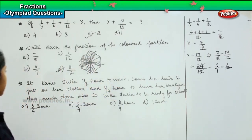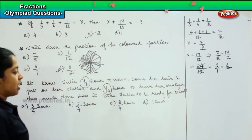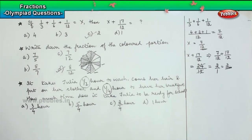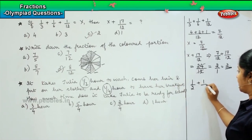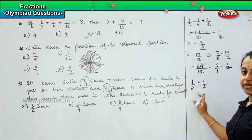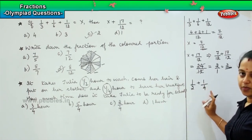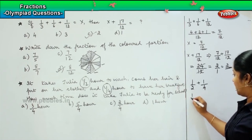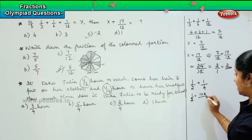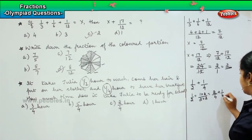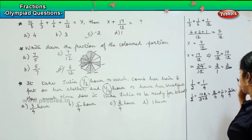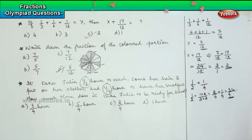The question asks us to add both times. So 1/2 plus 1/4. The least common denominator is 4, since 4 is divisible by 2. So 1/2 can be written as 2/4. Therefore, 2/4 plus 1/4 equals 3/4. It takes 3/4 hour for Julia to get ready — that is option A.